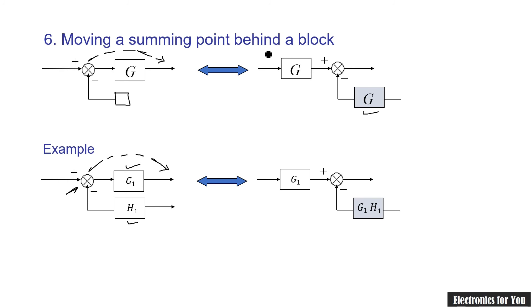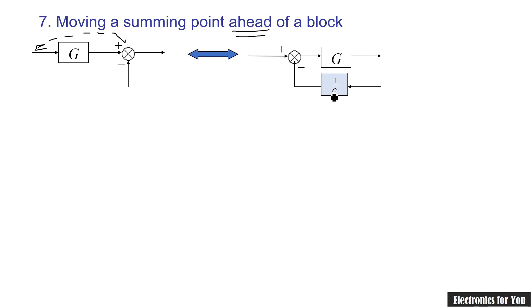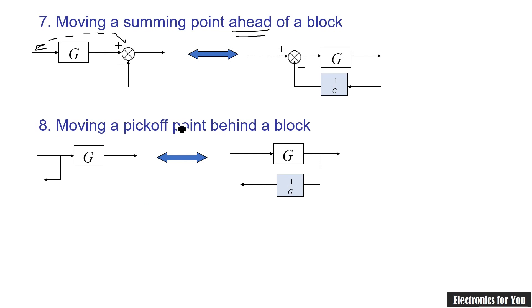The seventh rule is moving a summing point ahead of a block — that is, before the block. In this case, the transfer function of the branch gets divided by the block's transfer function, becoming 1 divided by G.